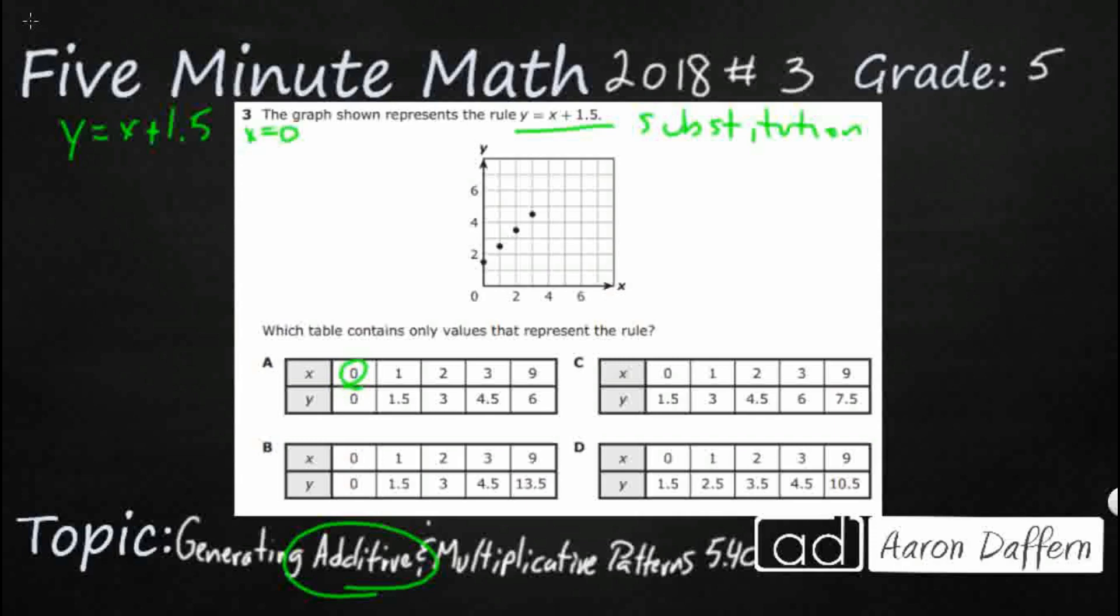We're going to look to see, do we get to that y? So y equals, I'm going to replace the x with a 0, because that's what this first 0 says, plus 1.5. That's not looking like it's going to be good. So y equals 1.5, but this table says y should equal 0. If y doesn't equal 0, y starts right up here at 1.5, which means A is not going to work for us.